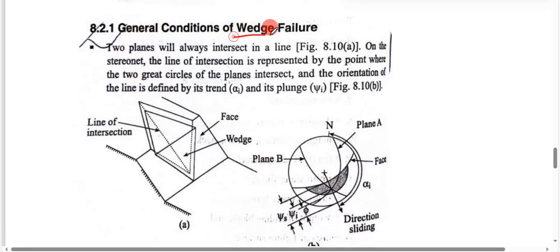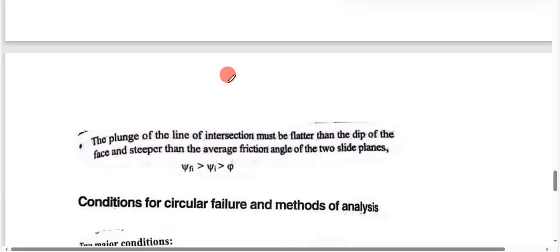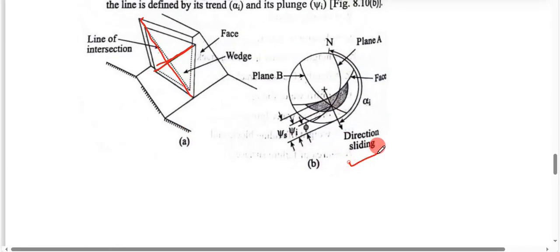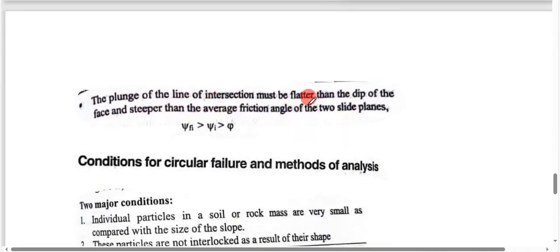For wedge failure, the general condition is that two planes will always intersect in a line. The plunge of the line of intersection must be flatter than the dip of the face and steeper than the friction angle of the two sliding planes.